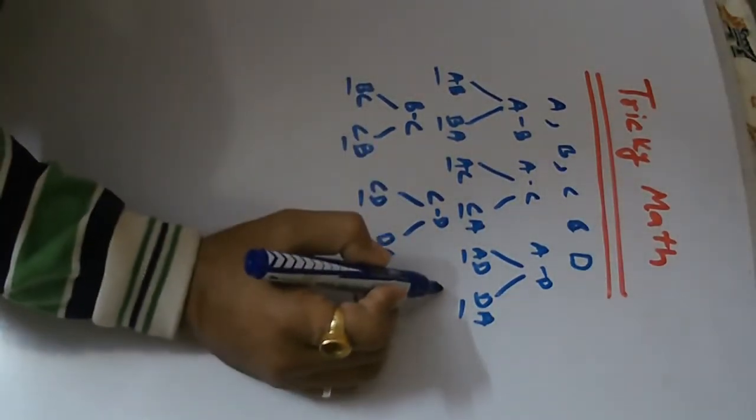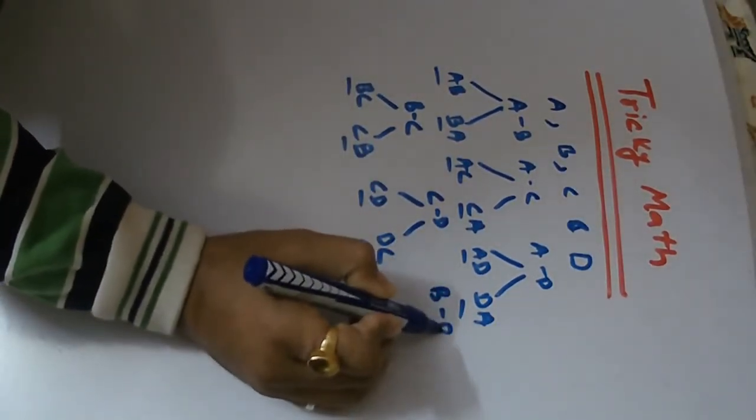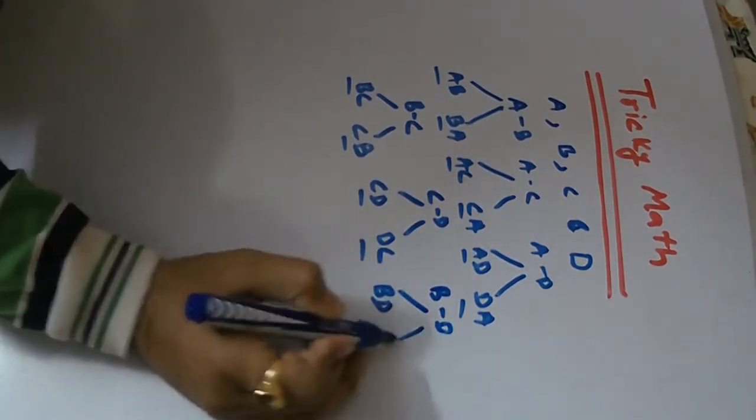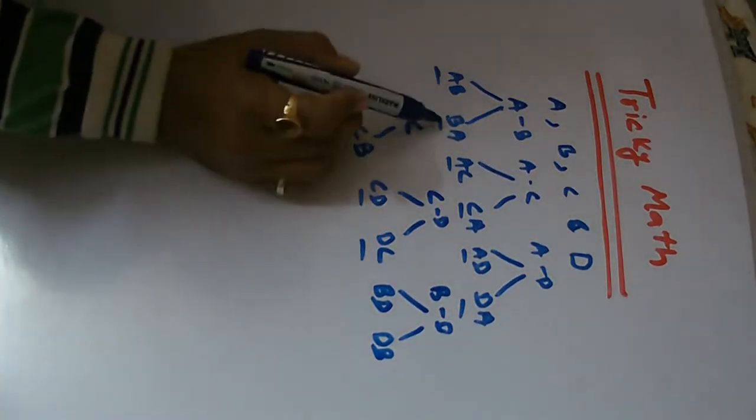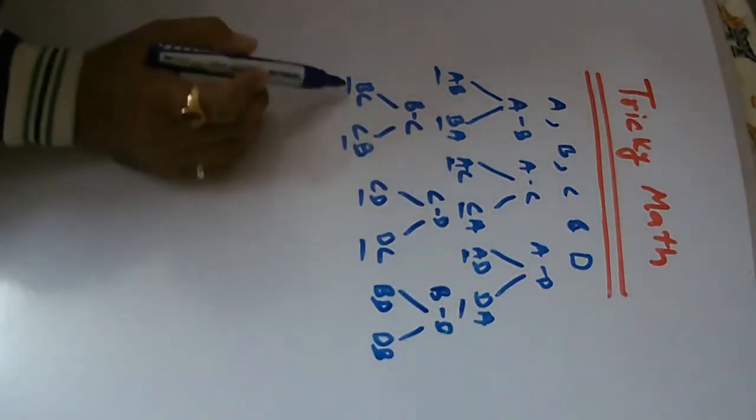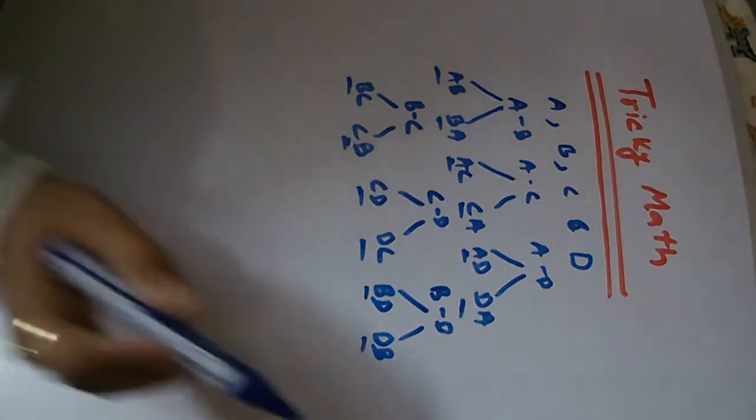We have B with D, so we have BD and DB. Now we have 1, 2, 3, 4, 5, 6, 7, 8, 9, 10, 11, 12.